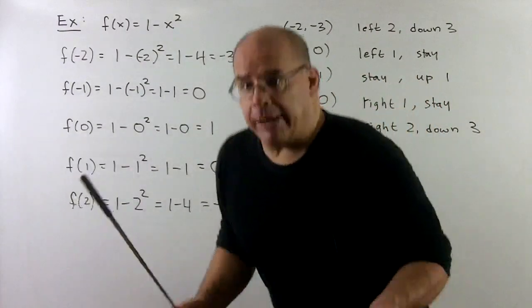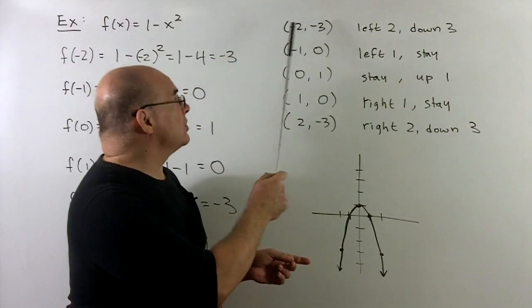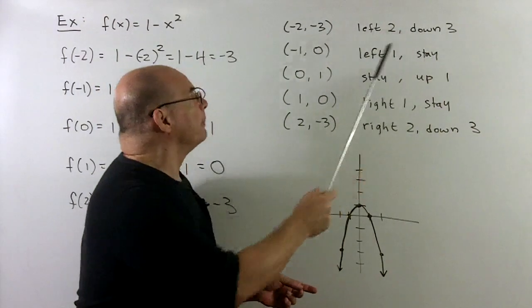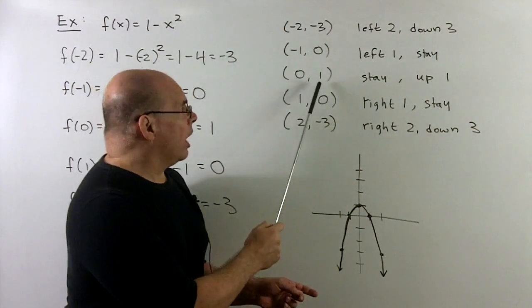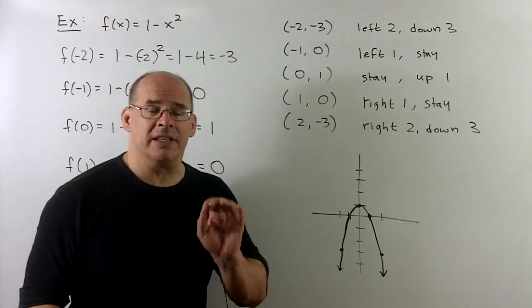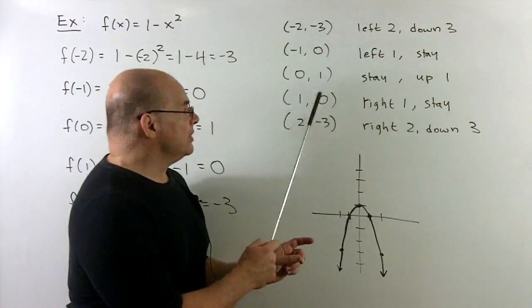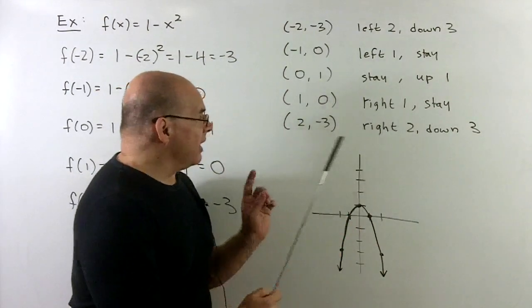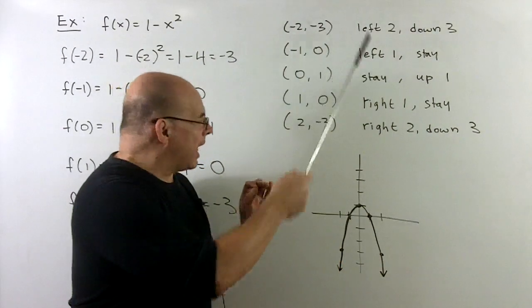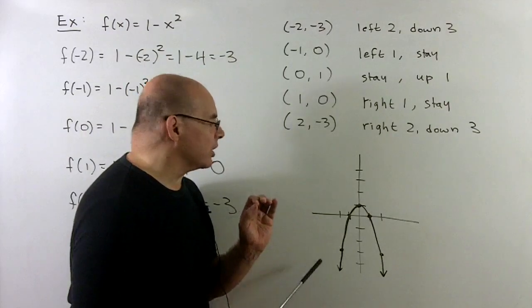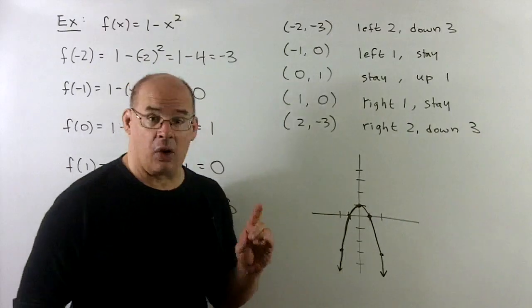We can skip the table and just go to ordered pairs. We translate minus 2 minus 3. That says left 2 down 3. Minus 1, 0 says left 1, stay. 0, 1. Be careful with this one. This says stay with respect to x and y, then up 1. 1, 0, right 1, stay. And then 2 minus 3, right 2, down 3. We plot our points, and then we know what comes out is going to be a downward facing parabola. And again, we'll see these later on.